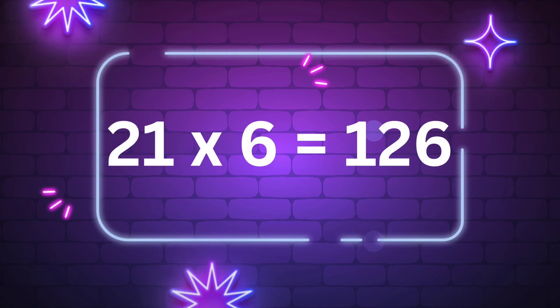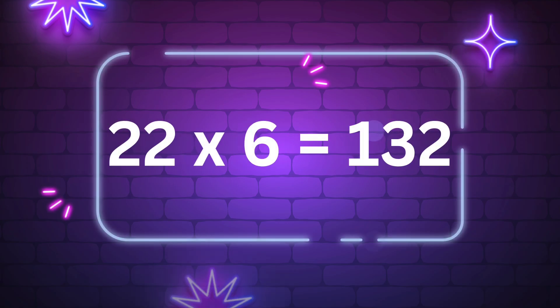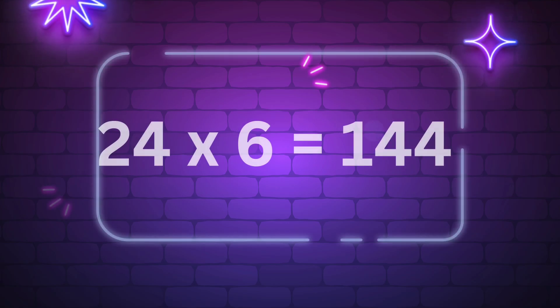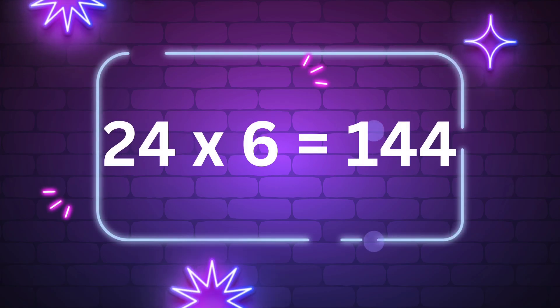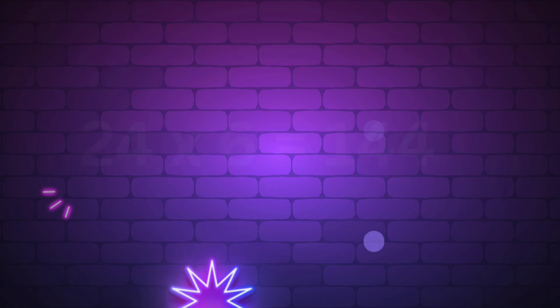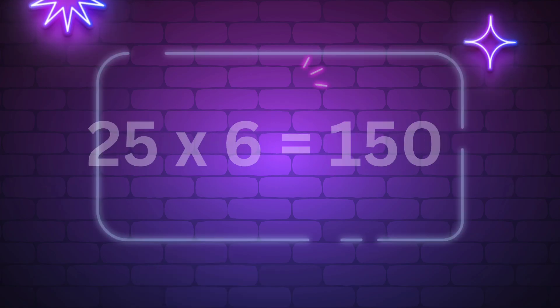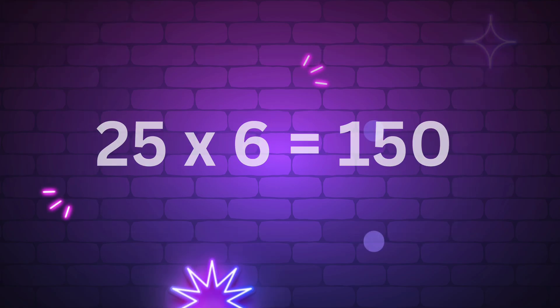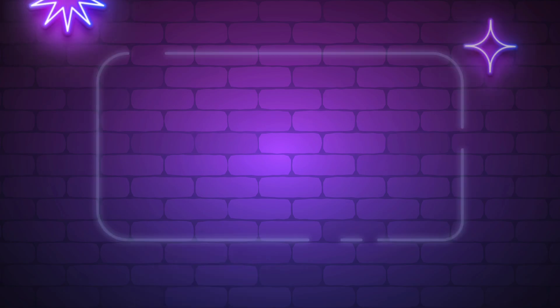Twenty-one times six is a hundred and twenty-six. Twenty-two times six is a hundred and thirty-two. Twenty-three times six is 138. Twenty-four times six is 144. Twenty-five times six is 150.